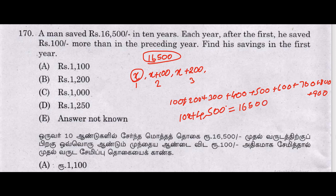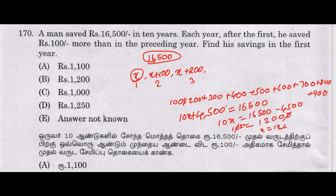Solving: 10x equals 16,500 minus 4,500, which gives 10x equals 12,000. Dividing both sides by 10, x equals 1,200. So the first year savings is 1,200 rupees.